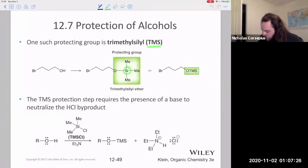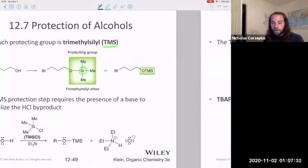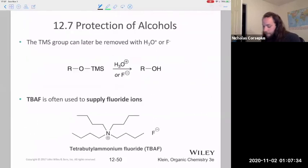So once we have our protected group, we can then add in magnesium and create a Grignard, right? And then of course, important for any protecting group is that you have to have a method of deprotecting.